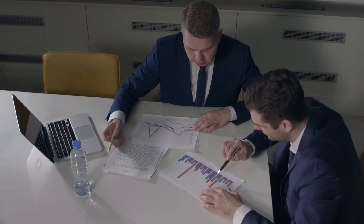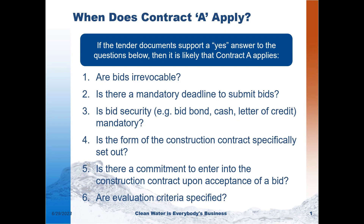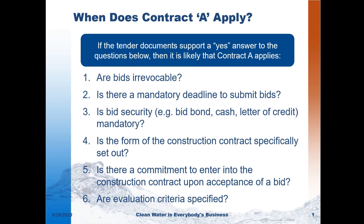Bidding on a non-Contract A project provides a completely different set of rules than a traditional Contract A binding document. So when does Contract A apply? If the project documents support a yes answer to the highlighted questions on the slide, then it likely is that Contract A applies. Increasingly, though, language is being included in project documents that makes determining whether Contract A applies or not very difficult. Including most but not all of that information is something we see more and more of. If the outcome for the successful bidder is a construction contract, then the project call will likely be found to give rise to Contract A. But if it's merely a right to negotiate a deal, then Contract A is much less likely to have been found to arise.